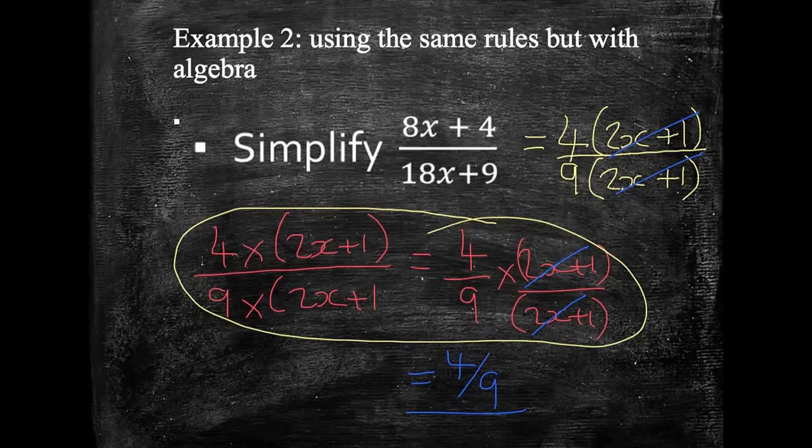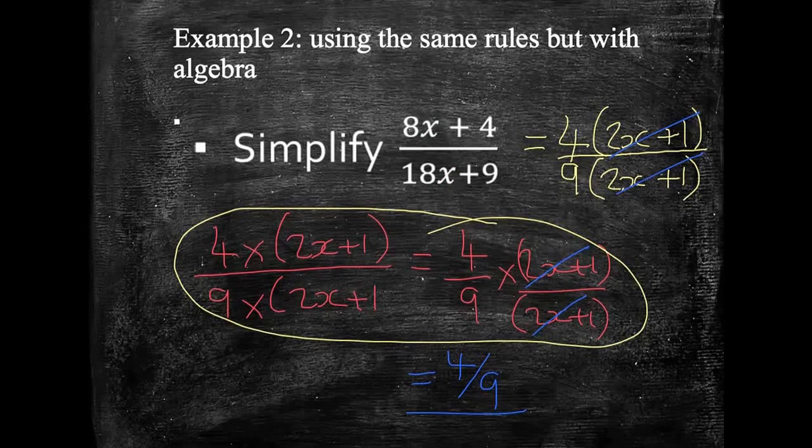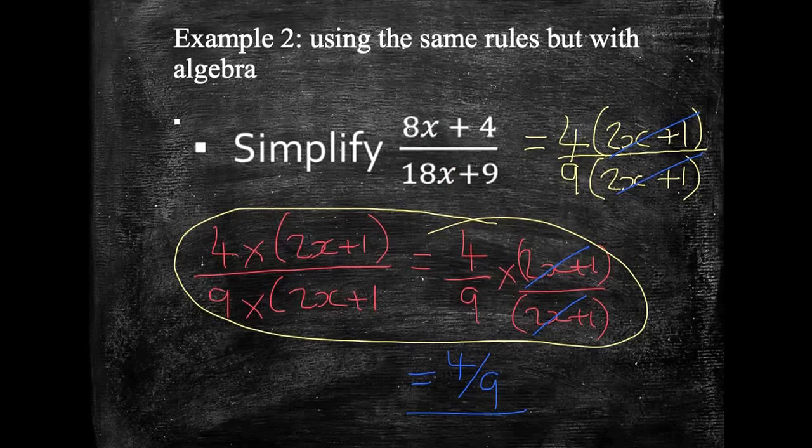I just wanted to show you how it works and relate that back to the numbers we were doing before. What I don't want you to do is to start looking at these and thinking, oh, well, I've got an 8x plus 4 and an 18x plus 9. That means I can cancel out my x's. You can't do that. Even if you wanted to, even if it's tempting to, you cannot do that. You've got to factorise first.